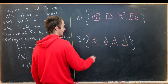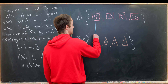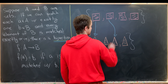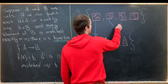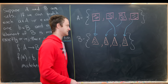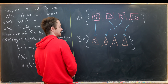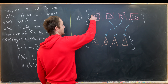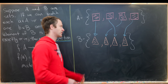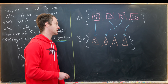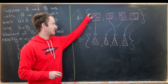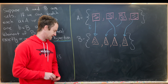For instance, if our matching goes like this: the first square is matched with the first triangle, the second with the second, the third with the third, and the fourth with the fourth — then we would say F of this square equals this triangle, F of this square equals this square, and so on. This is a description of the function, a mapping from set A to set B.